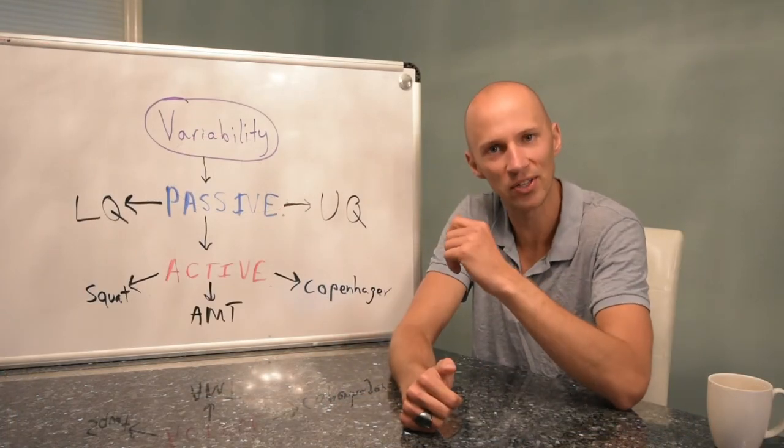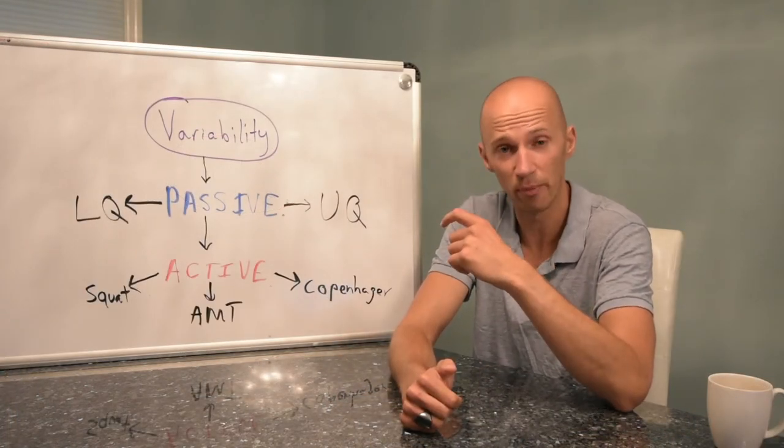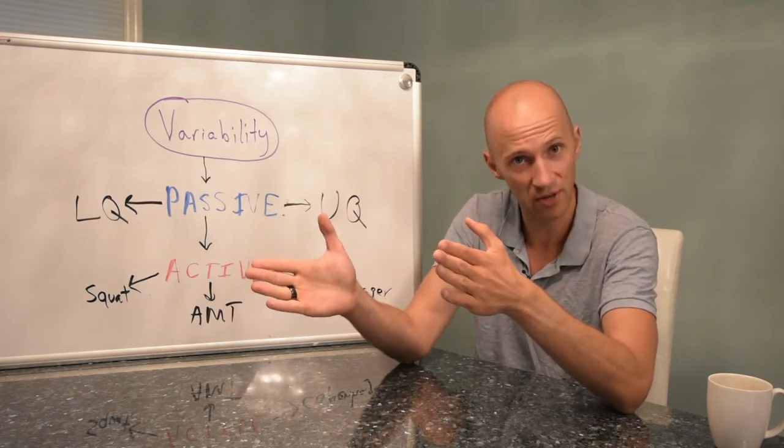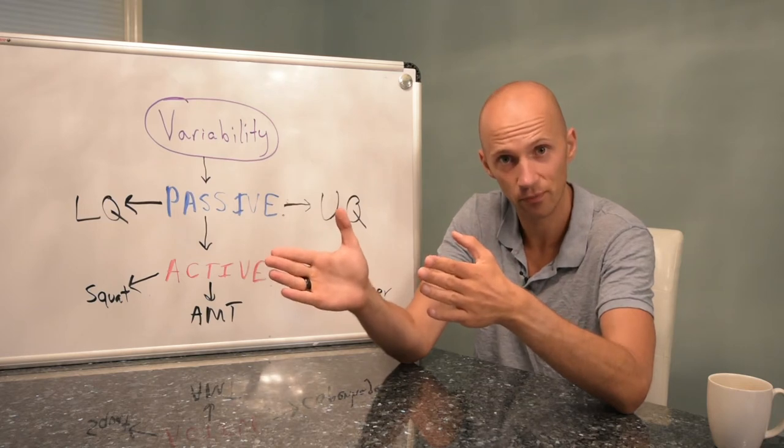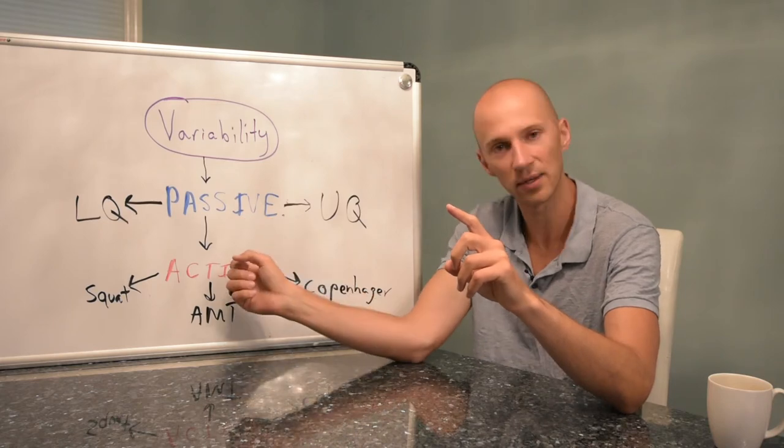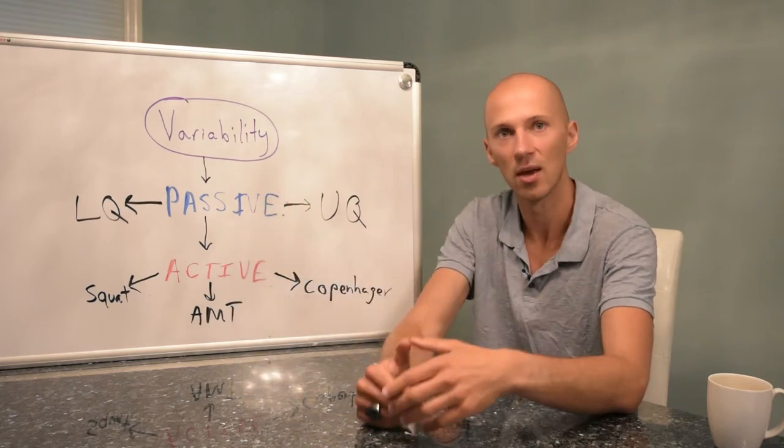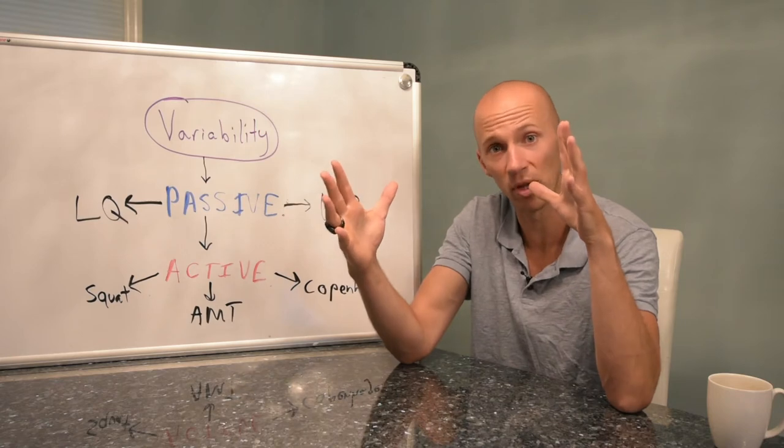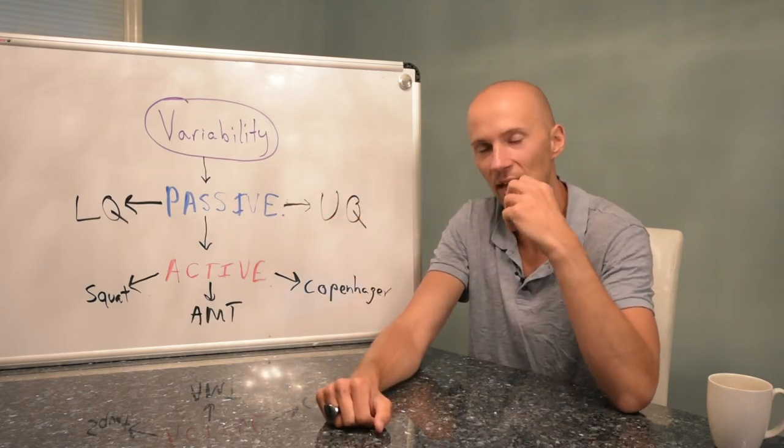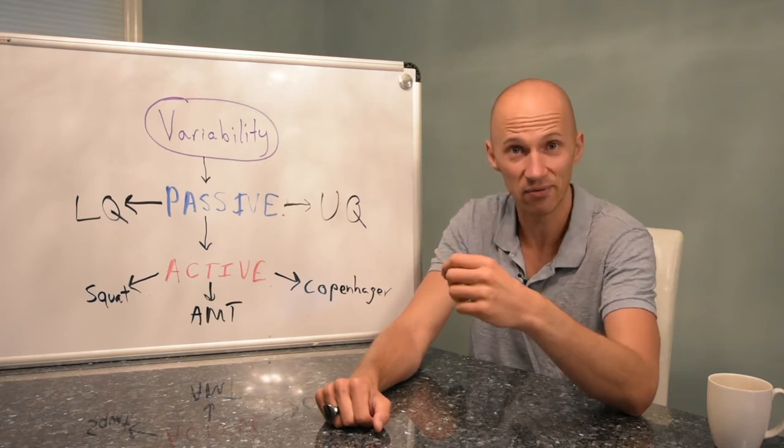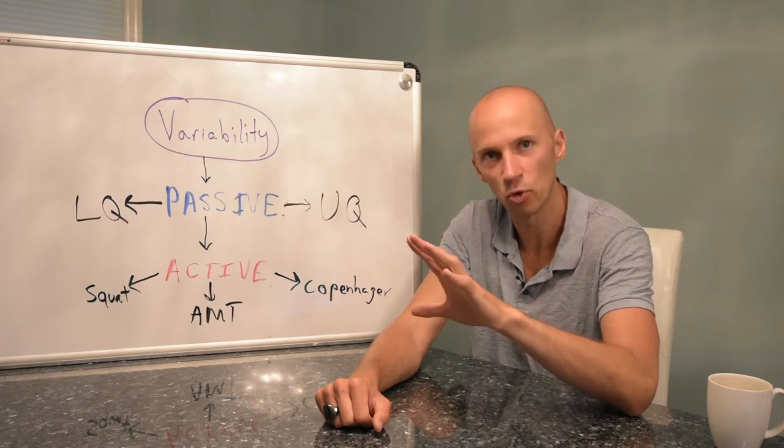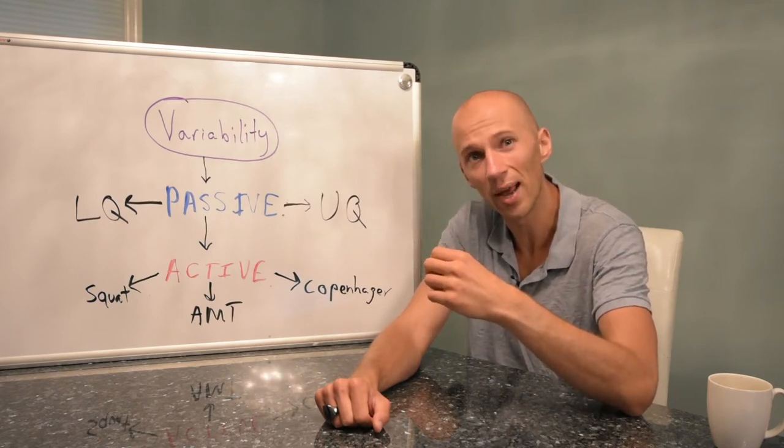The next step in this process is movement variability, and that is the capability to move in desirable ranges. There are two components to variability: passive and active. Passive is, do I have the requisite joint mobility to perform a given task? Active would be, can I utilize that joint mobility in a given task? Now you guys can use whatever system you prefer, we'll just go into detail about what I do.